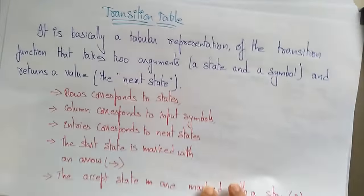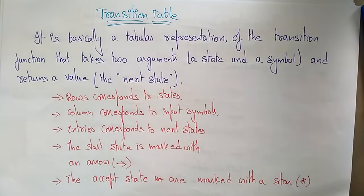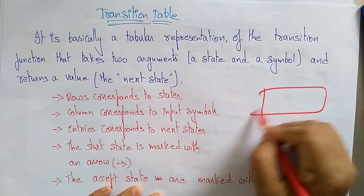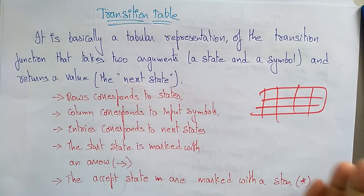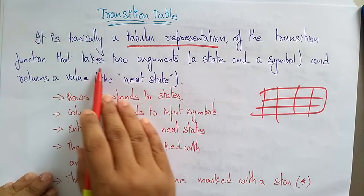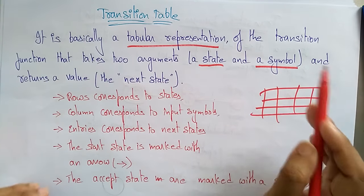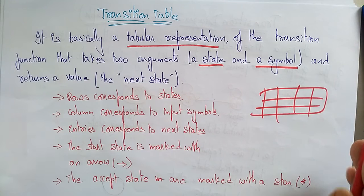Now let's look at the transition table. A transition table is a tabular representation of the transition function. It takes two arguments: a state and a symbol. The state can be an initial, intermediate, or final state, and the symbols are the input symbols.